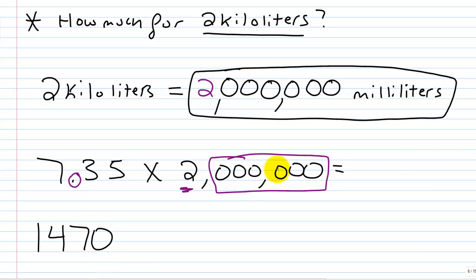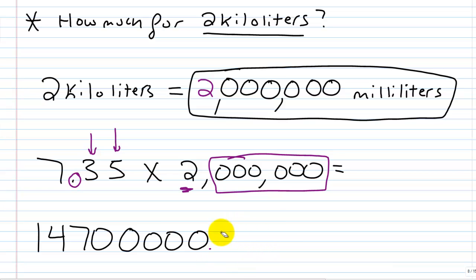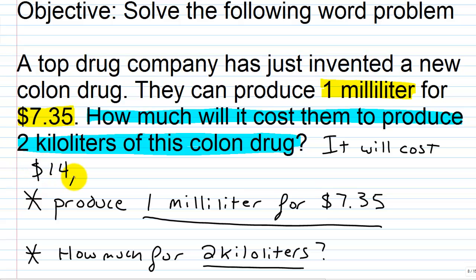35 times two is 70, so this gives us 1,470. We have six trailing zeros to attach. Then we have two decimal places between the factors, so we move two places to the left. We end up with $14,700,000. So how much will it cost them to produce two kiloliters of this colon drug? It will cost $14,700,000.